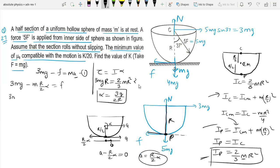3MG minus Mr by 2 alpha, alpha's value is 9g by 2r, equal to friction. This is equal to 3MG by 4. This is the friction value.